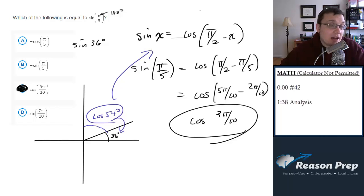The fact that you can't use your calculator makes this really difficult. If you could use a calculator, this would be trivial because you'd just plug in sine of pi over 5 and all these values to see which are equal. But we can't.